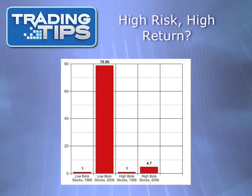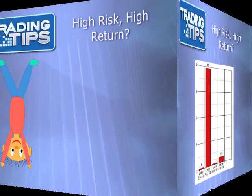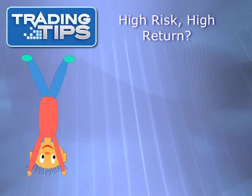Then when beta coefficient was used instead of total volatility to divide the groups, the results were even more stunning. The group of stocks with the lowest beta coefficient — beta being another proxy for volatility and risk — saw a one-dollar investment turn into $78.86, while the group of the highest betas saw one dollar turn into just $4.70. This group actually lost money when you adjust for inflation.